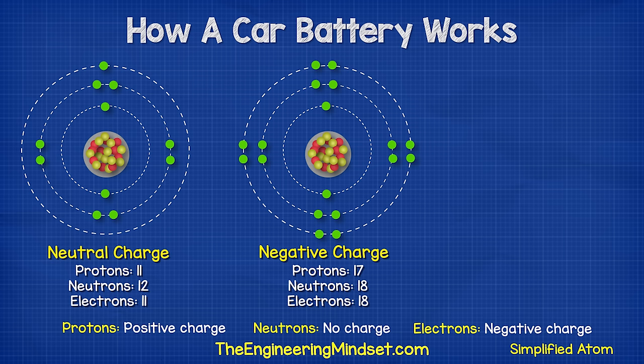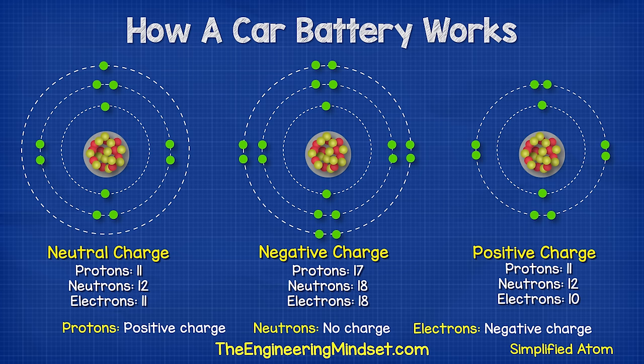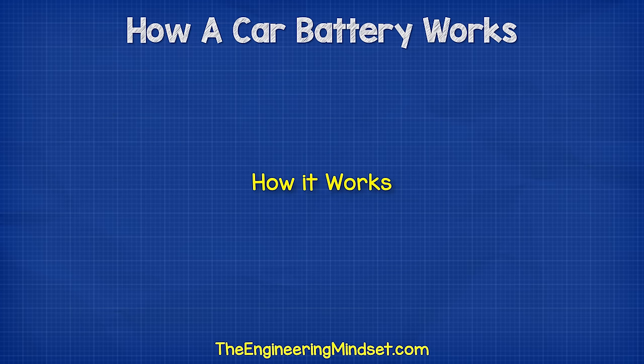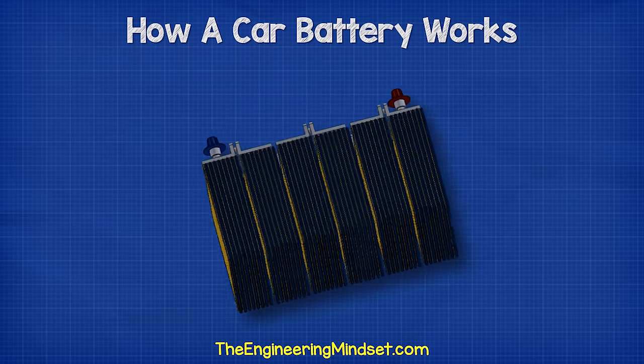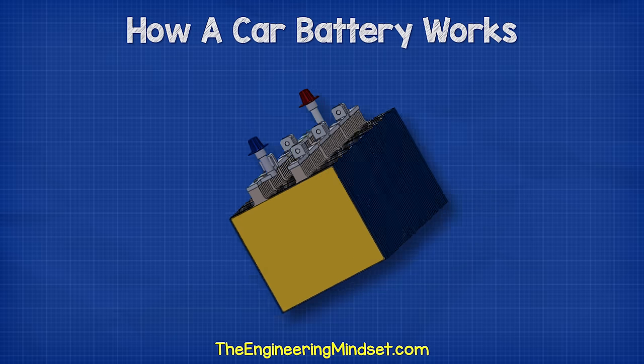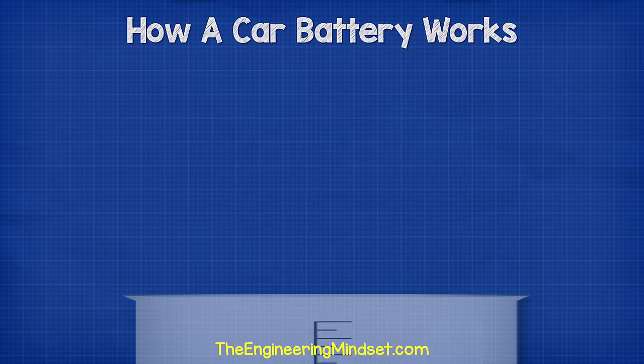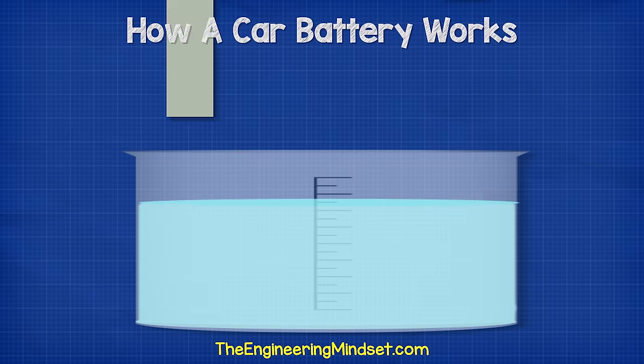If the atom has more electrons than protons it's a negative ion. If the atom has more protons than electrons it's a positive ion. Rather than trying to understand the complex construction, we're going to simplify it down to a simple model of a cell with a single cathode and anode.